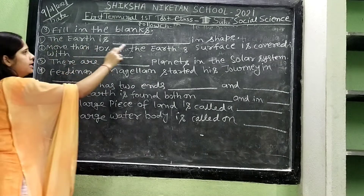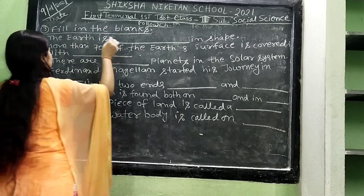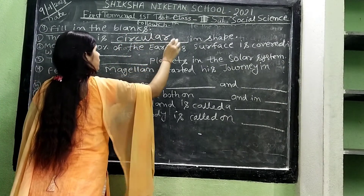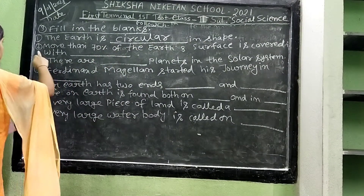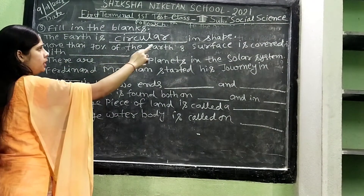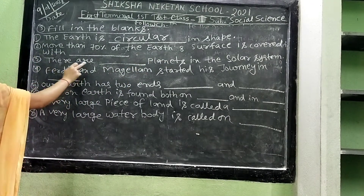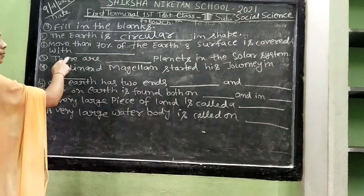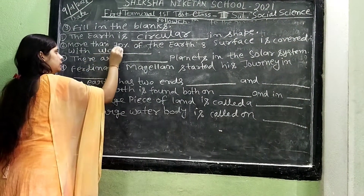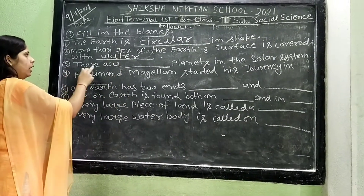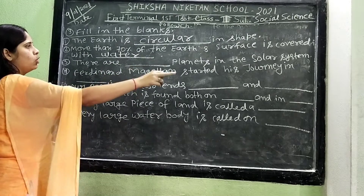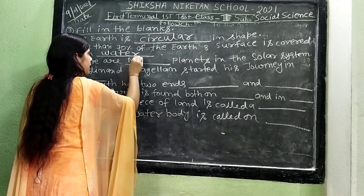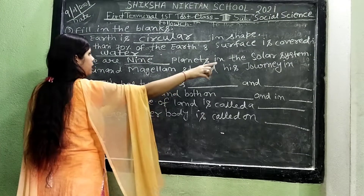Matter number 3: Fill in the blanks — answers. Number 1: The earth is shaped like a circle — answer: circular. Number 2: More than 70% of the earth's surface is covered with — answer: water. Number 3: There are — answer: nine planets in the solar system.